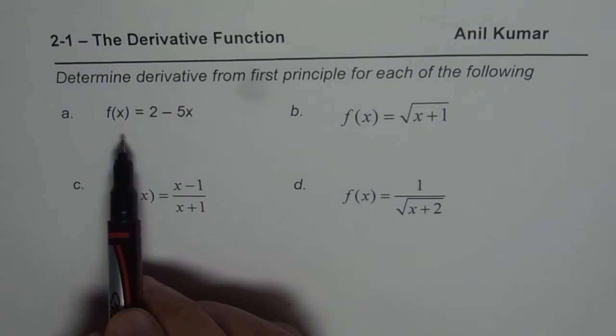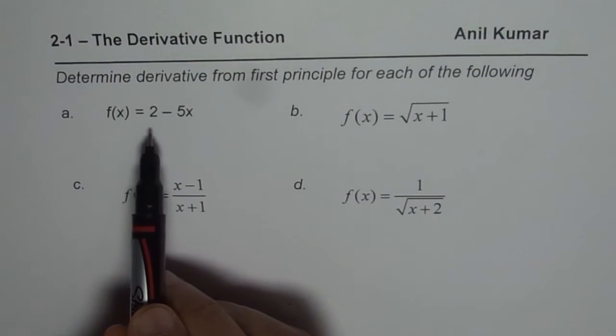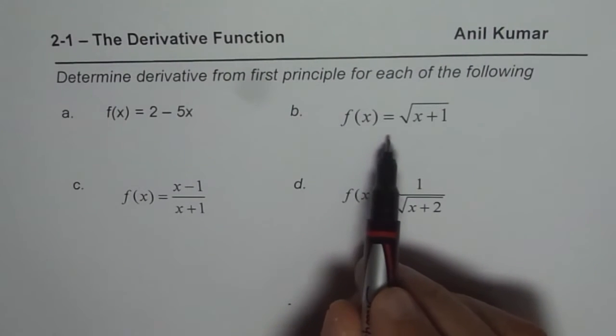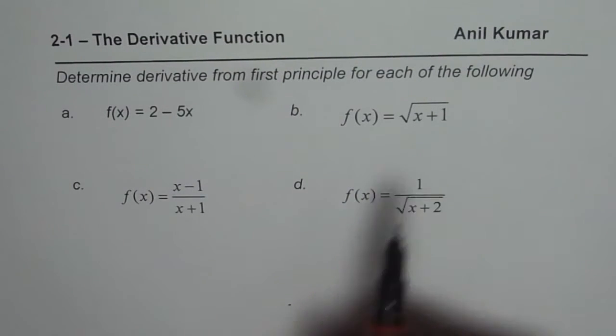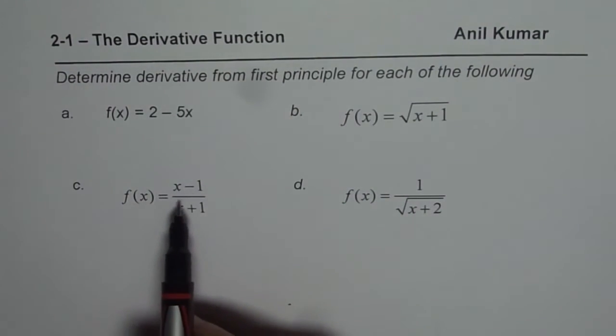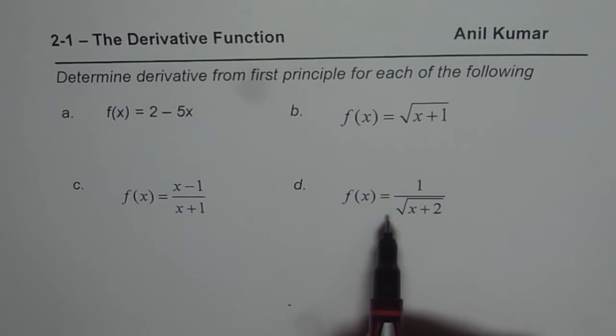The first one here is a linear function f(x) = 2 - 5x. Then we have f(x) = sqrt(x + 1), f(x) = (x - 1)/(x + 1), and f(x) = 1/sqrt(x + 2). I would like you to pause the video, copy the question and answer.